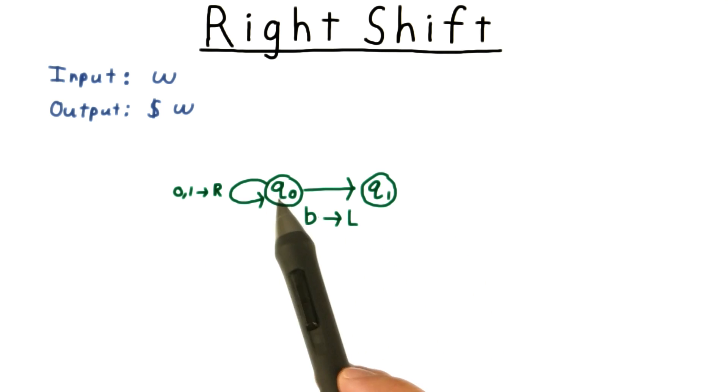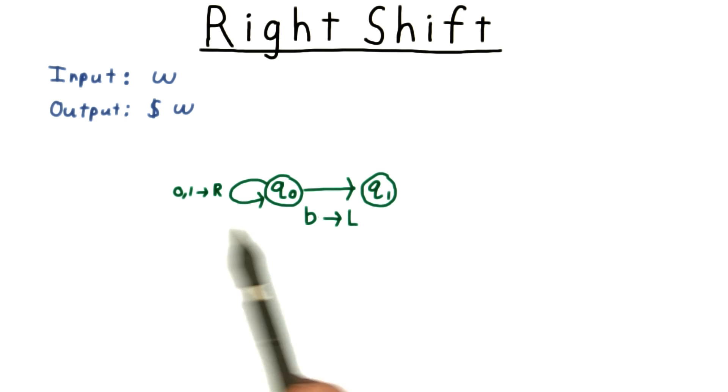So we have q0 transition to itself on 0 and 1 and only move into state q1 when it encounters a blank symbol.